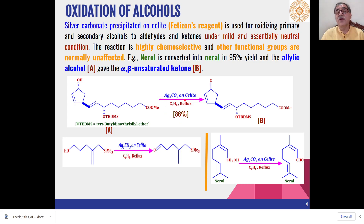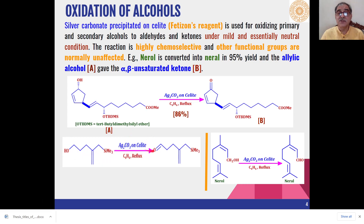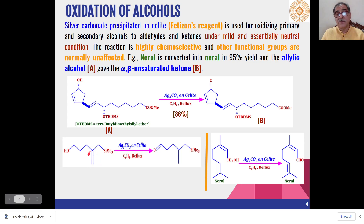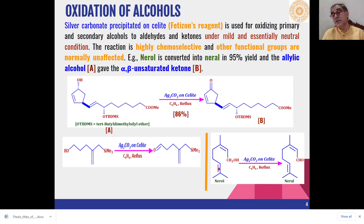So silver carbonate on Celite is a very chemoselective reagent for oxidation of primary and secondary alcohols. In another example, a primary alcohol is oxidized to the corresponding aldehyde, and here also other functional groups like the carbon-carbon double bond and trimethylsilyl group are not affected by the oxidizing agent. Furthermore, nerol, which is a natural product, can be converted into the corresponding aldehyde neral under the same conditions, and the carbon-carbon double bonds present in the molecule are not affected — only the primary hydroxyl group is oxidized to the corresponding aldehyde.